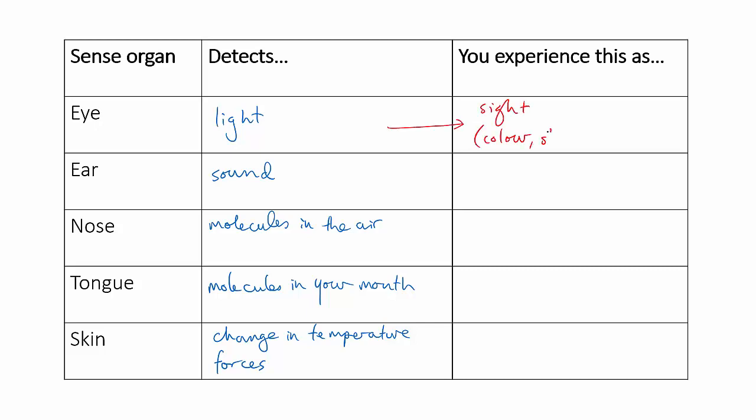So, you experience the nerve signals from your eyes as sight, color, shape and movement. And those nerve signals from your ears become sound, with volume and pitch and direction.